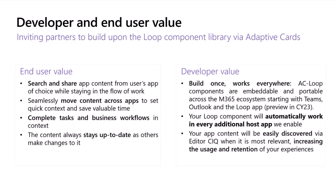We currently have started supporting these loop components in Teams and Outlook. You may already be familiar with some first-party loop components such as meeting notes in Teams meetings, and the loop components embedded in chat for collaboration — those are native loop components. Here, we are talking about extensible loop components that developers can also build. The loop components stay in sync and automatically work in every additional host app that we enable. Right now, support is available for Teams and Outlook and we are in preview. We are targeting preview in the loop app by the end of this year, with the eventual goal of supporting loop components in other Microsoft 365 hosts as well.